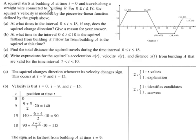A squirrel starting at building A at time zero travels along a straight wire to building B. This is the interval. The velocity is the graph right here. It's a piecewise linear function, so those are all lines, so it's nice and easy to find areas under curves defined by the graph.